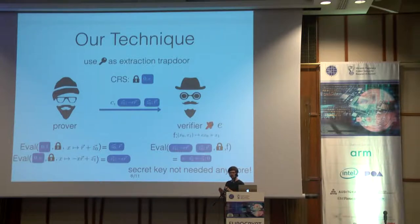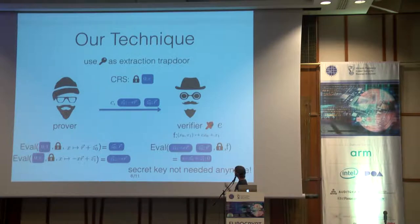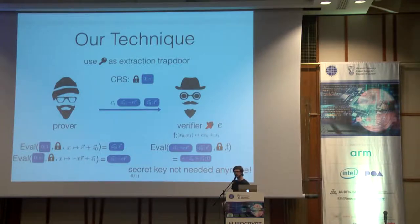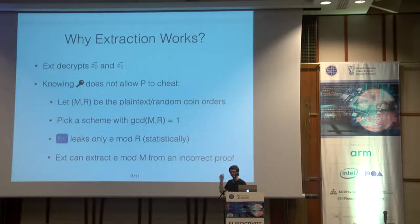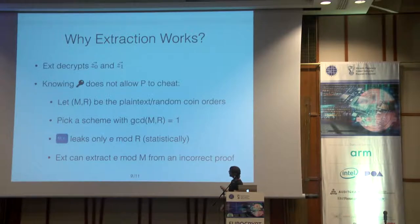If we have that, the prover who wants to transmit e·c₀ + c₁ to the verifier will encrypt c₀ with some randomness r, and encrypt c₁ with a correlated randomness minus e·r. He can do that because he has this encryption of zero with randomness e. The verifier who knows e can cancel out the randomness: he multiplies the encryption of c₀ homomorphically by e and combines it homomorphically with the other, so the e·r and minus e·r cancel out. The verifier obtains an encryption of e·c₀ + c₁ with zero randomness.